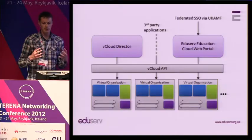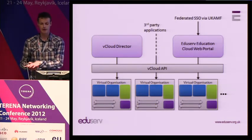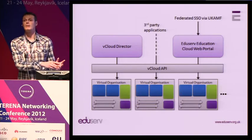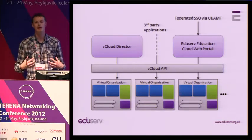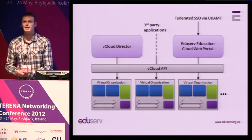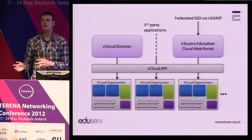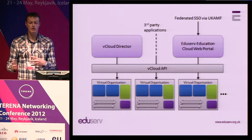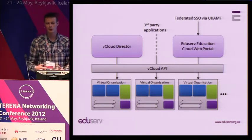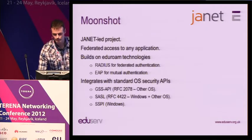Zooming out a bit: we've got multiple virtual organizations, the vCloud API on top of that, and out of the box the vCloud Director application, so an organization can log in and manage their infrastructure through that. The API is public so you can integrate against that yourselves. What I'm going to show in the slides is the portal that we've built on top of this API that is federated with the UK AMF via SAML, which allows us to deploy infrastructure within this cloud. Moving on to the Moonshot side: I imagine most people here know a fair amount about Moonshot already. It's a JANET-led project.